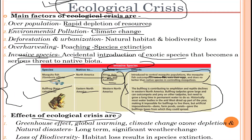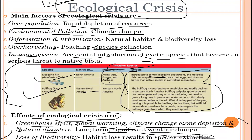These are some invasive species causing ecological crisis. Some effects of ecological crisis are the greenhouse effect, global warming, climatic change, ozone depletion, and natural disasters — all long-term effects causing significant weather change. Loss of biodiversity causes habitat loss, which results in species extinction. Major contributing factors include the greenhouse effect, global warming, and climate change due to ozone depletion.